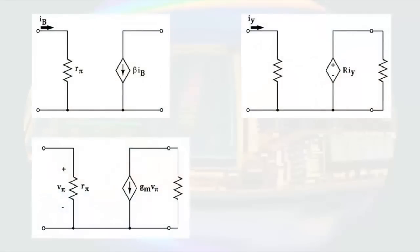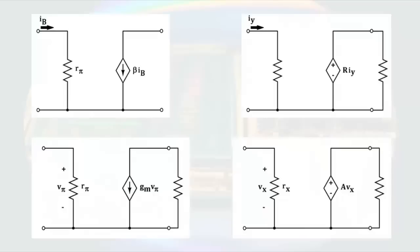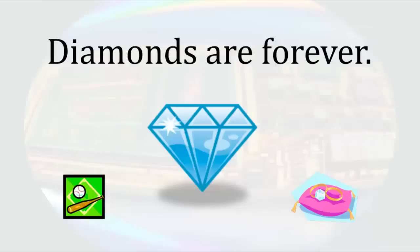Something that can help us remember this comes from looking at the different types of dependent sources. Looking at the four different types of dependent sources, the current controlled current source, the current controlled voltage source, the voltage controlled current source, and the voltage controlled voltage source, we see they have one thing in common. And that is, the symbol representing them is a diamond. And we all know, diamonds are forever. In case I have not made this clear, you can never turn off a dependent source.